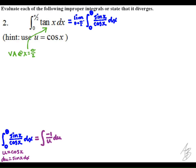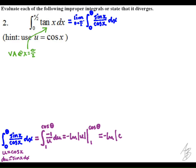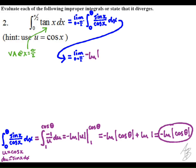I let u equal cosine of x, so du equals negative sine of x dx. This gives us the integral of negative 1 over u with respect to u. An important note: when using substitution and leaving the integral in terms of u, we must change both the integrand and the limits. The lower limit x equals 0 gives cosine of 0 equals 1, and the upper limit becomes cosine of theta. Evaluating that integral gives the negative natural log of the absolute value of cosine of theta.